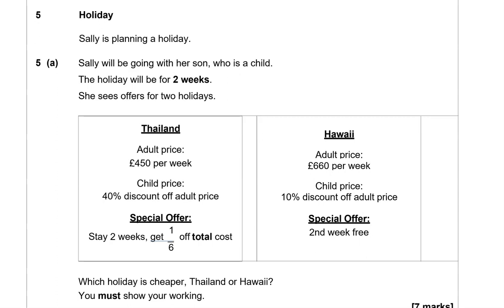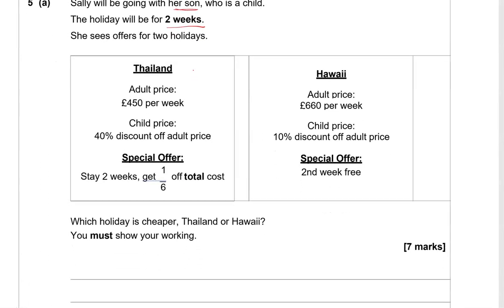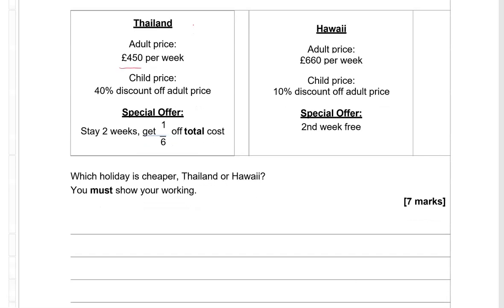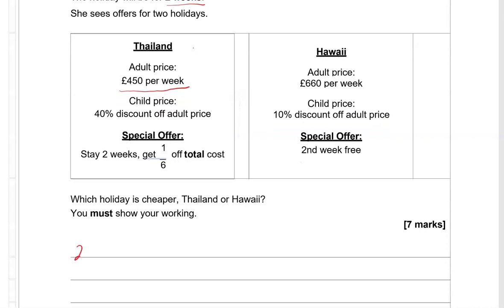Question 5A. Holiday. Sally is planning a holiday. Sally will be going with her son who is a child. The holiday will be for 2 weeks. She sees offers for 2 holidays. So far we know that we've got an adult travelling with a child. Let's look at Thailand first. Adult price is £450 per week, but we're looking at 2 weeks, so 2 × 450 gives us 900.